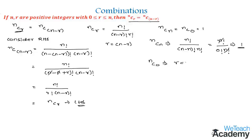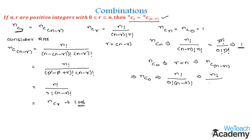Now let us prove that nC0 is also equal to 1. If we substitute r = n in the theorem nCr = nC(n−r), we get nC(n−n), which implies nC0. Using the formula n! divided by 0! × (n−0)!, we get n! divided by 0! × n!. Since 0! = 1, we can cancel n! in the numerator and denominator, giving us a value of 1.